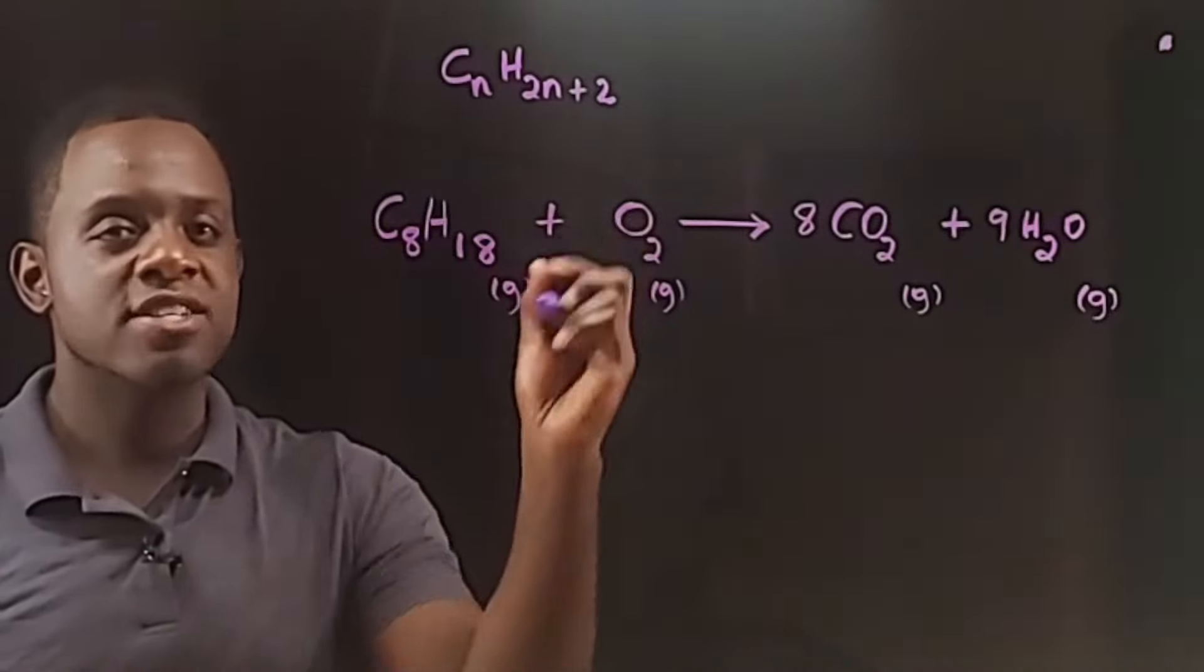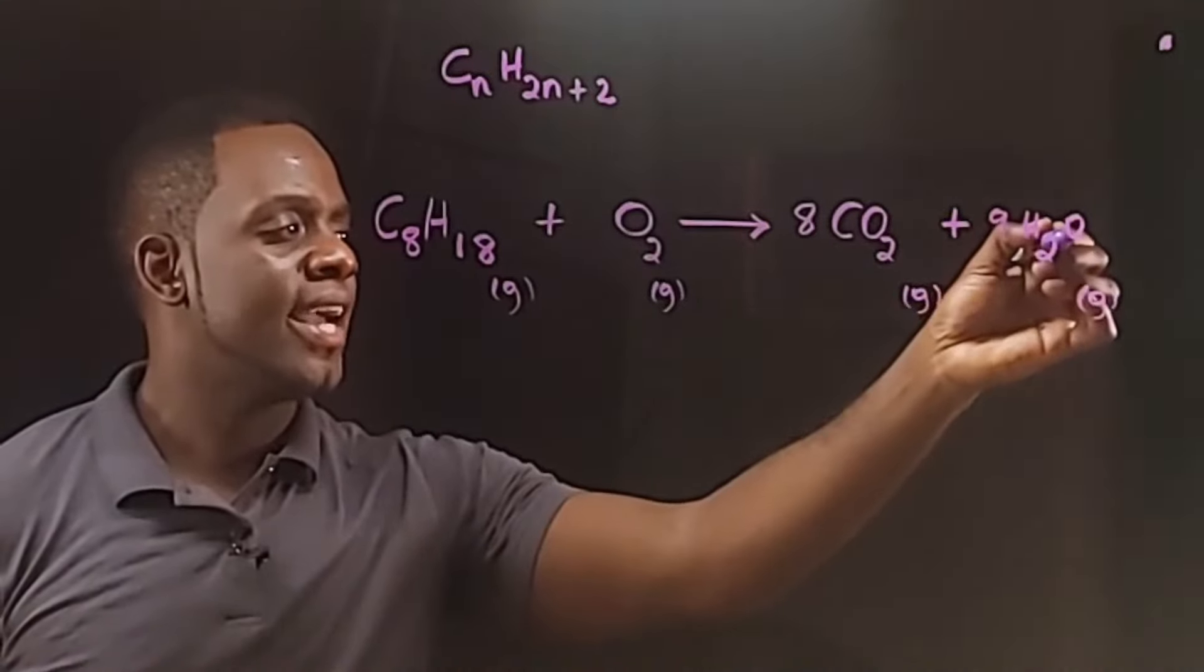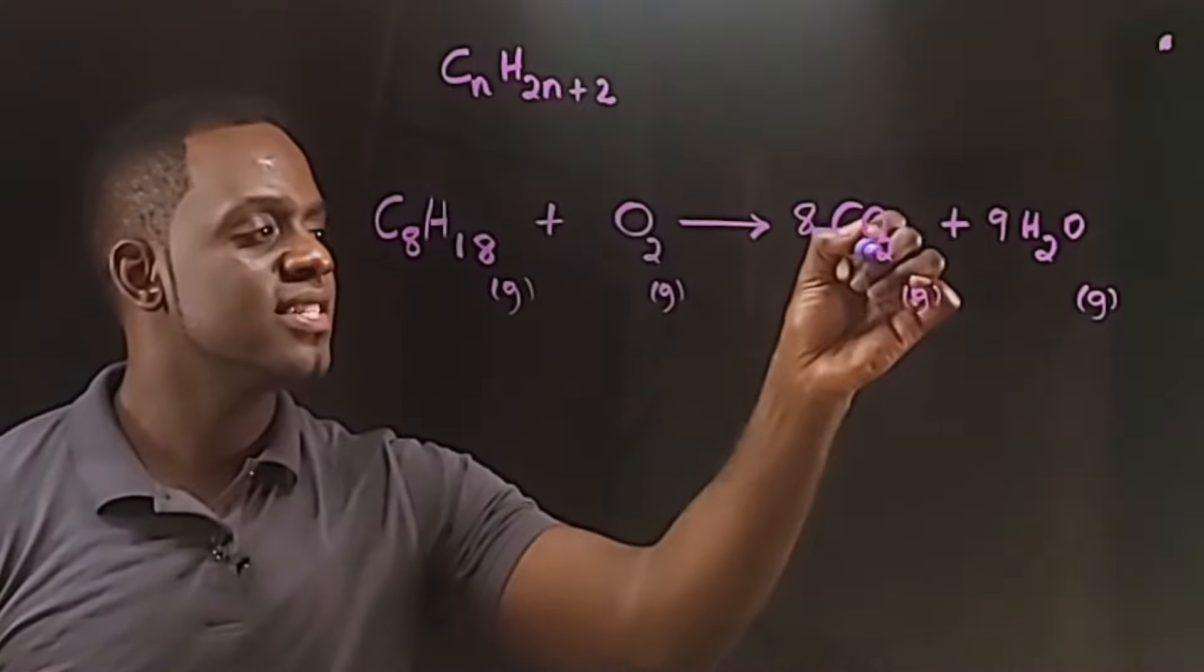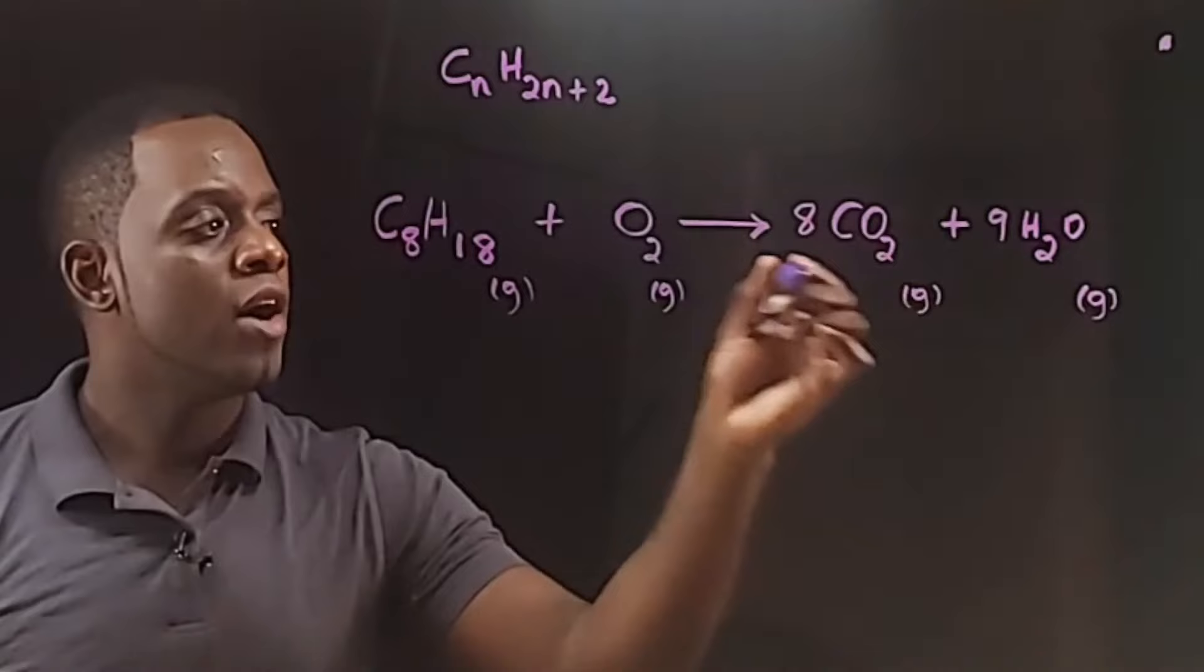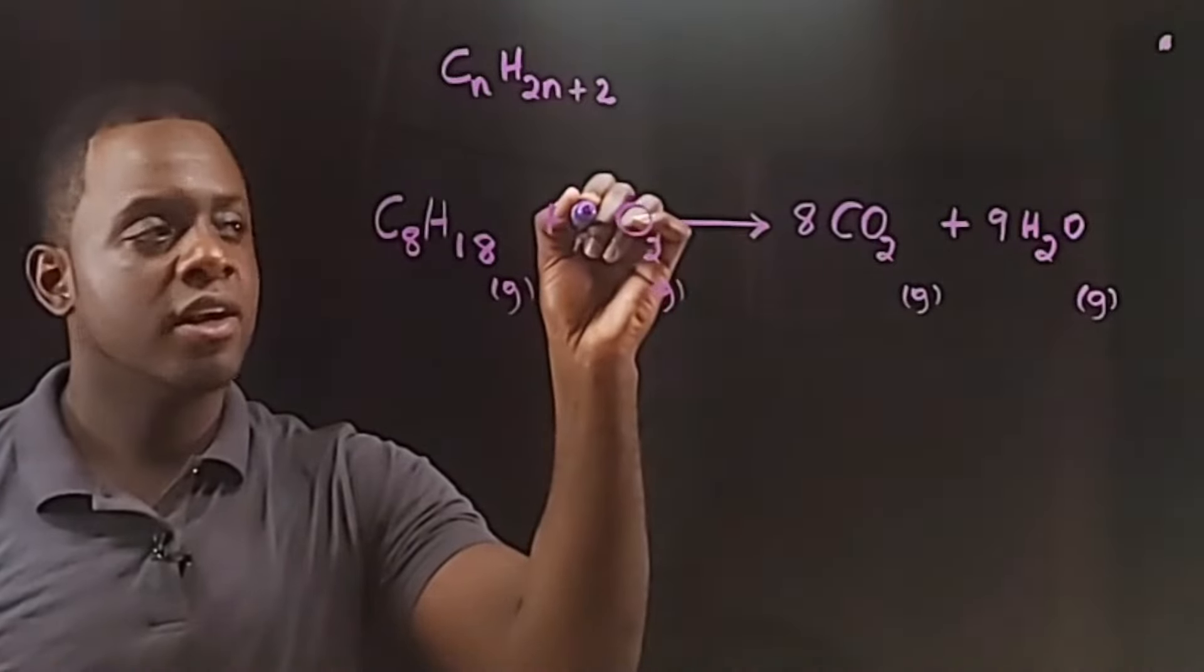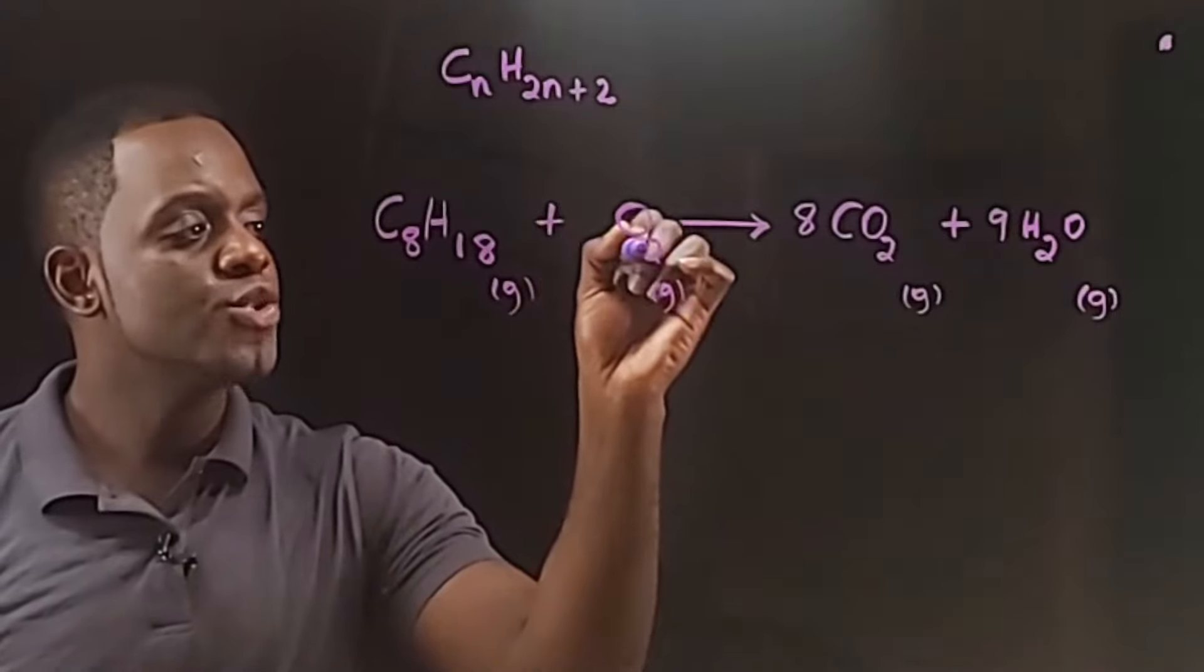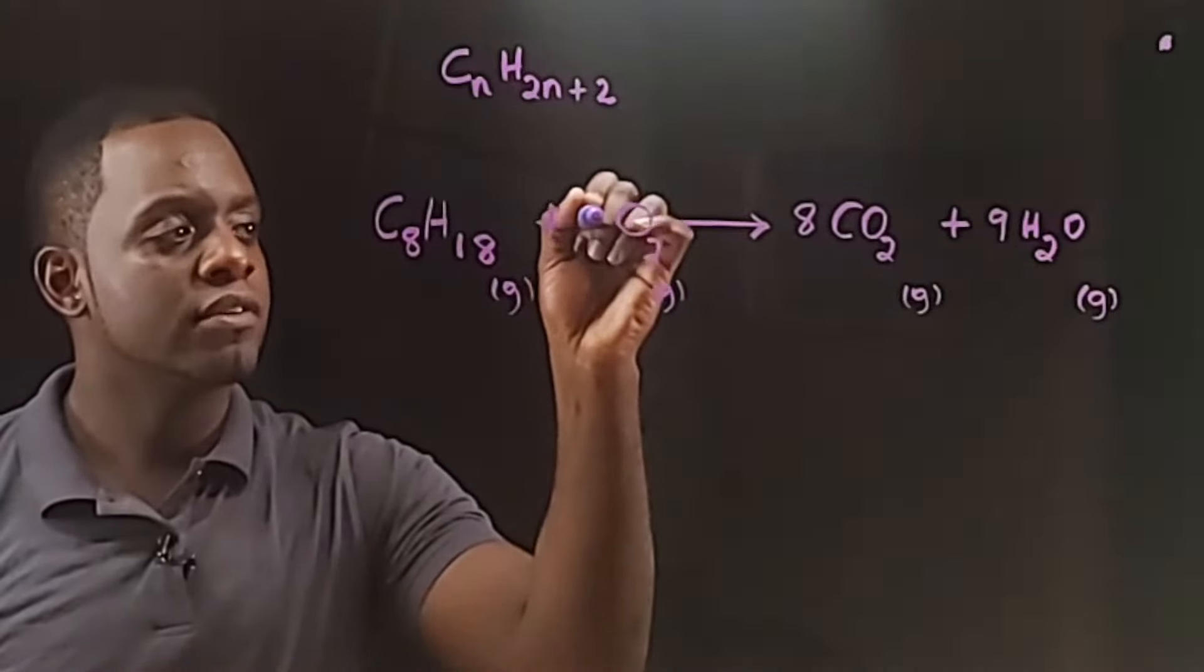It's time for the last one, the oxygen atoms. We have on the right hand side 9 plus 8 times 2, which is 16. 9 and 16 is 25. Now if we put 25 here, that will not be correct because this 2 will be multiplying any coefficient that we put in front of the oxygen.